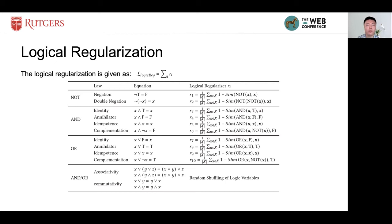We take the double negation rule R2 here as an example. The basic idea here is that if we pass a vector into the NOT module twice, then it should be returned a vector which is similar to itself.